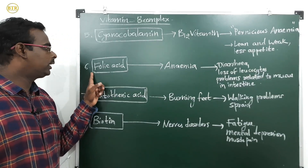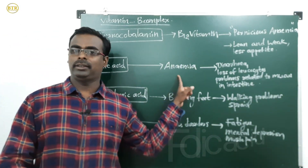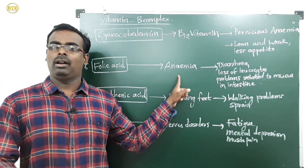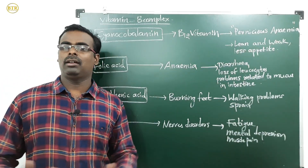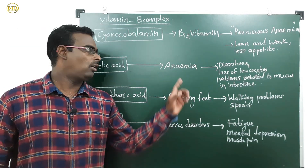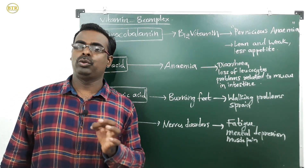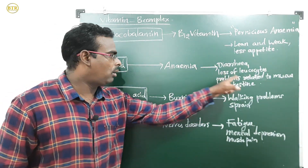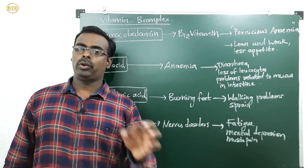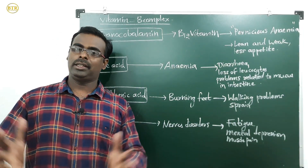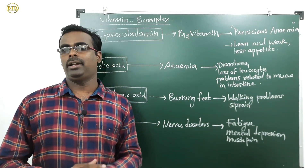The sixth B complex vitamin is folic acid. Deficiency of folic acid also causes anemia. Symptoms include diarrhea (loose motions), loss of leukocytes — meaning a decrease in the number of white blood cells — and problems related to the mucus in the intestine.